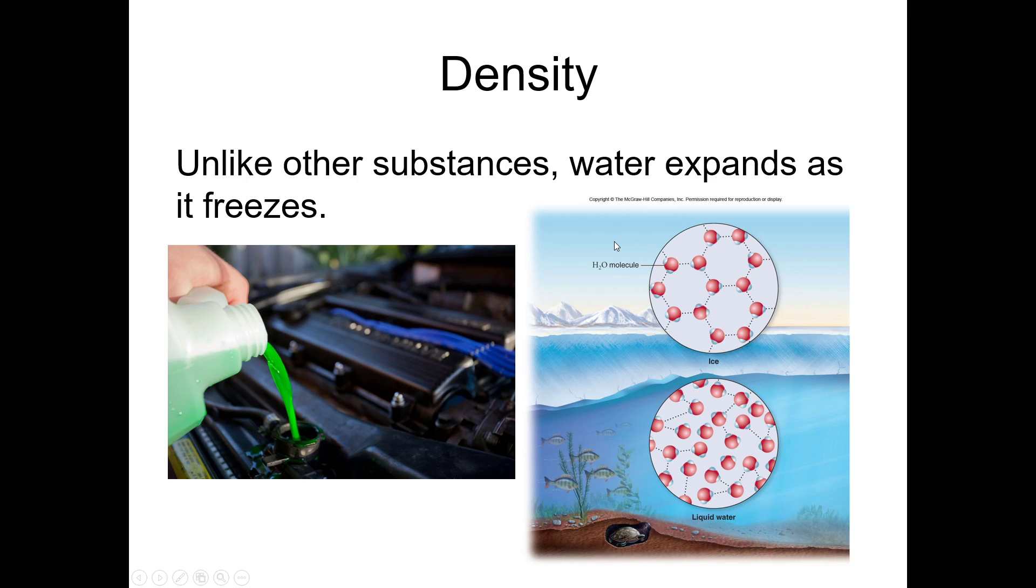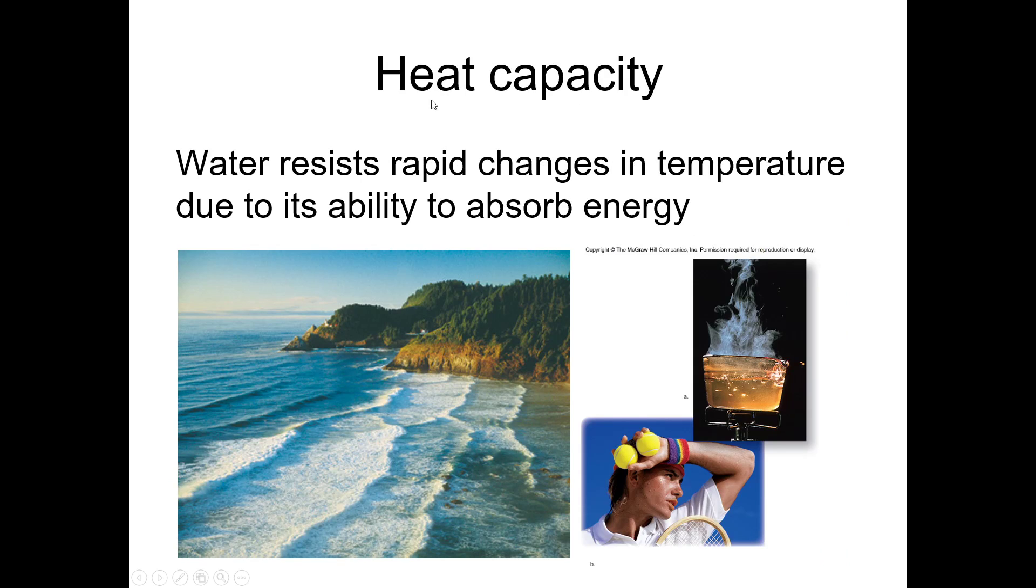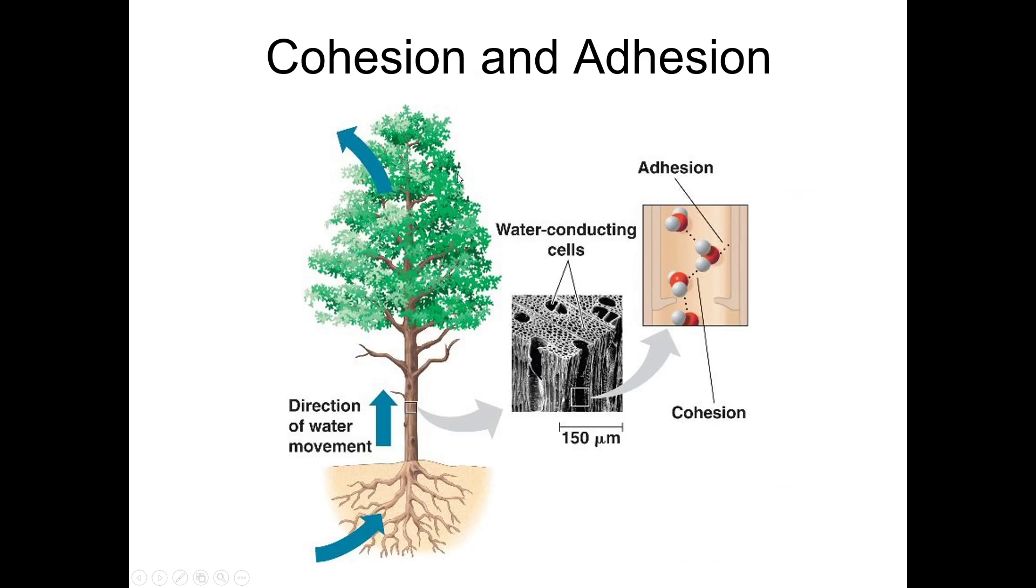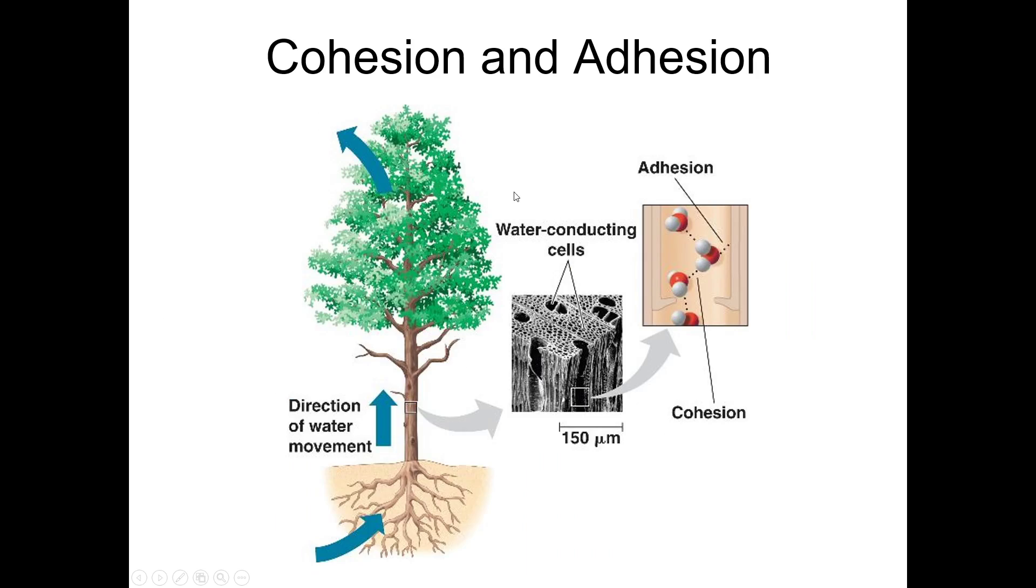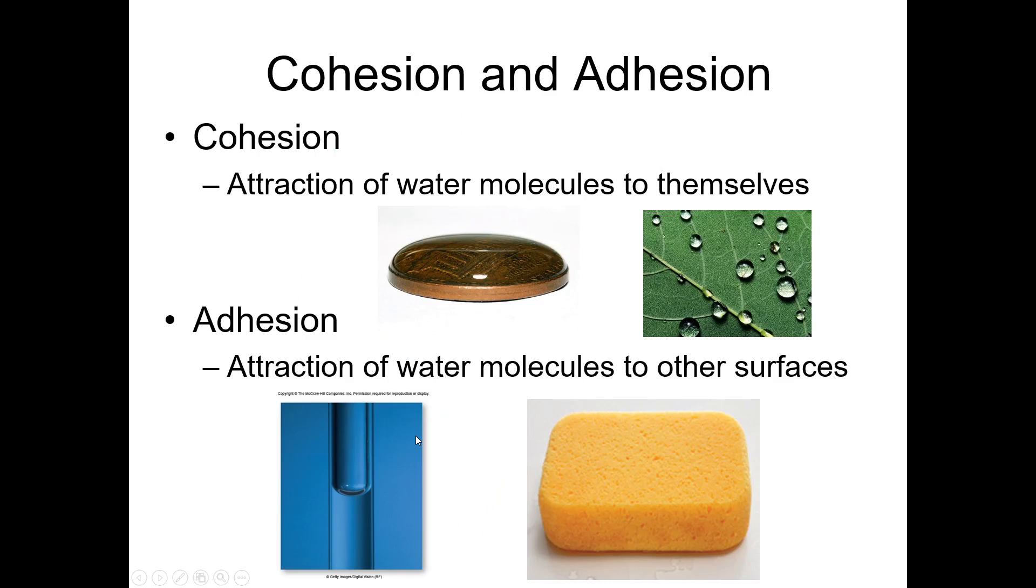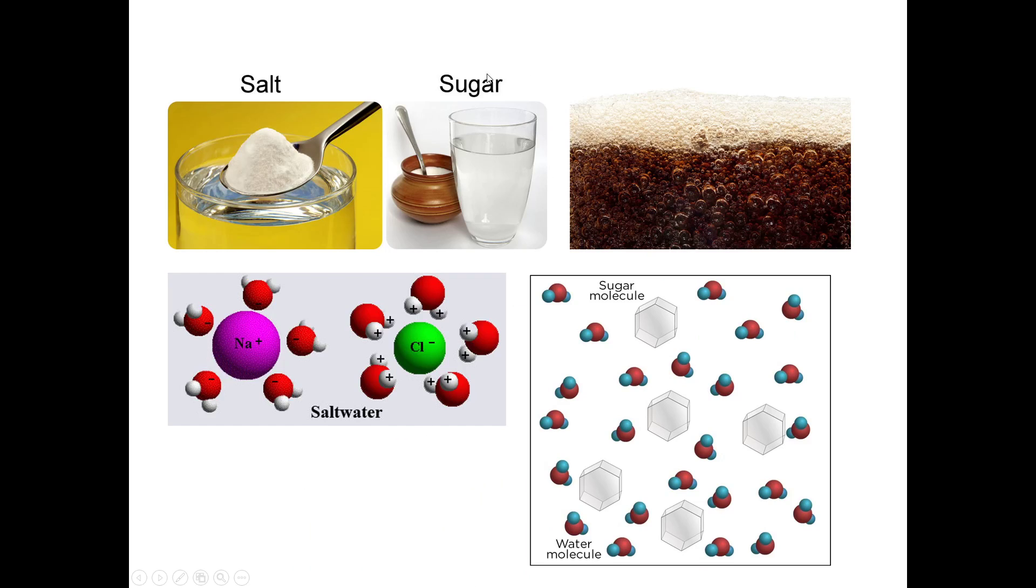So all the others are pretty straightforward. Make sure you know the examples that we talked about with heat capacity and cohesion and adhesion. These will sometimes be separate. Sometimes they'll be together, mainly just with this example on the tree. Know all of the things about a solvent in terms of what it can dissolve as those come up as well on the quiz.